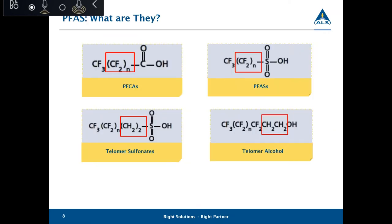Some PFAS contain non-fluorinated carbons back to the functional group — these are known as telomers. In the environment over time, abiotic and biotransformation of these polyfluorinated compounds, also known as PFAS precursors, will break down and produce stable PFAS compounds such as perfluoroalkyl acids. This is going to be important to remember because we'll be covering more of this when we talk about the TOP assay later.